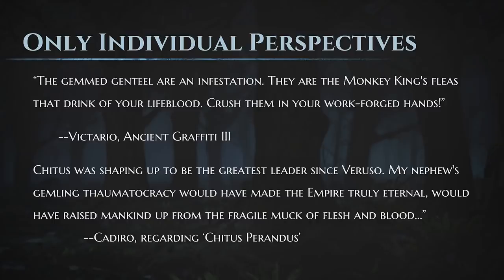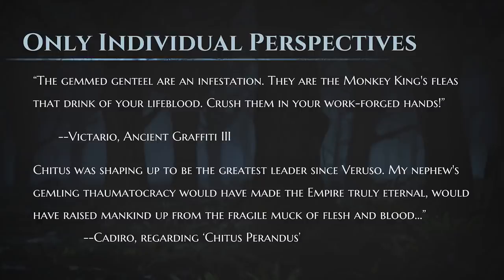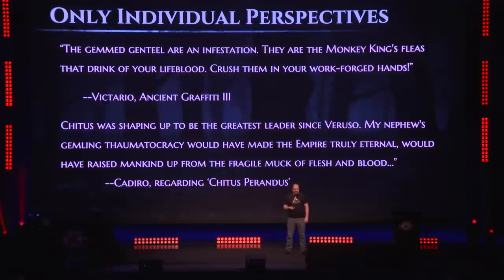Another example of conflict: Victario has an opinion on the gemlings that helped the Eternal Empire fall. But Kidero — Chittis Perandus' uncle — has a completely different opinion, because these are two people with very different agendas who lived at the time. The Emperor Chittis Perandus tried to make widespread use of implanted virtue gems to lift humanity to immortality and power. The poet Victario tried to rouse the people against these gemlings, considering them abominations. But Chittis' family member supported it because he would become very wealthy. The question of who was right is not answerable — we only have their subjective voices.